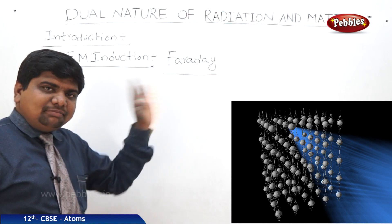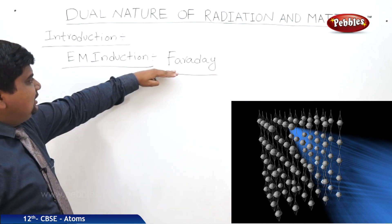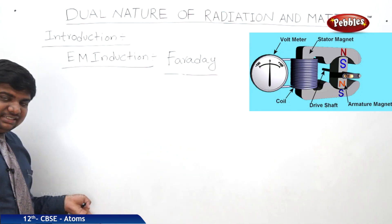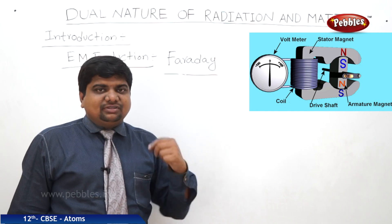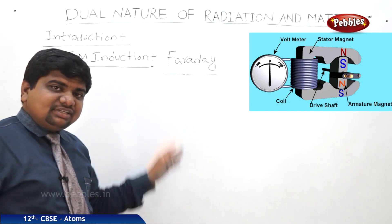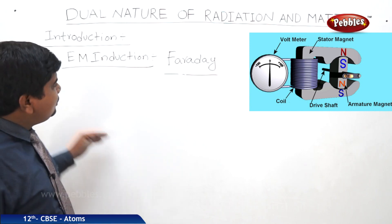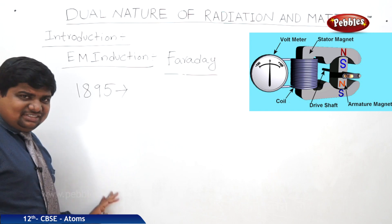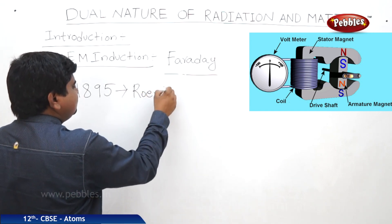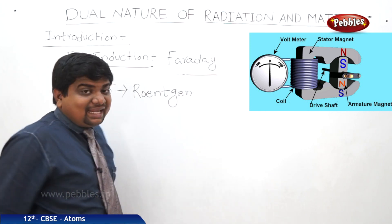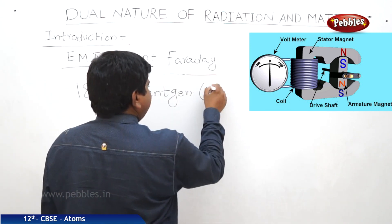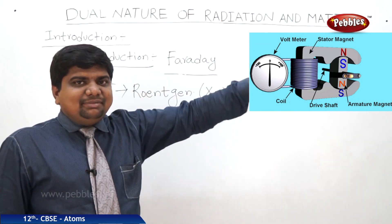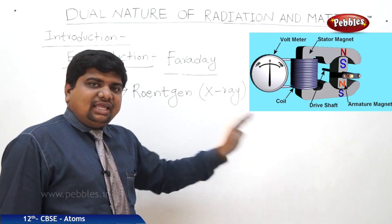Faraday and many others just observed the field propagations — E to M or M to E. But other scientists tried to propagate electromagnetic waves with respect to different wavelengths, which we discussed in the electromagnetic waves lesson. In 1895, the major discovery in physics: William Röntgen, the first Nobel laureate in physics, discovered the X-ray.